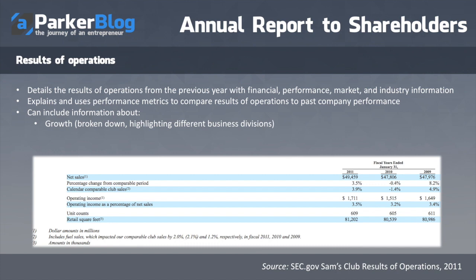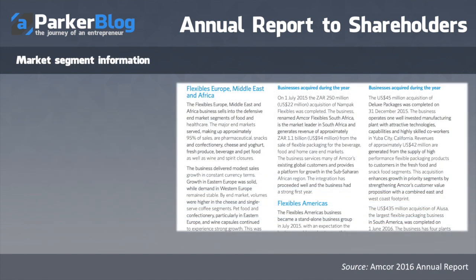Growth rates will vary between divisions, especially today in the age of the internet. It covers how they leveraged expenses and capital expenditures — whether they're in growth mode, closing stores, selling a subsidiary, or liquidating assets. And of course, return on investment: what was the return on the money they sunk into the company.